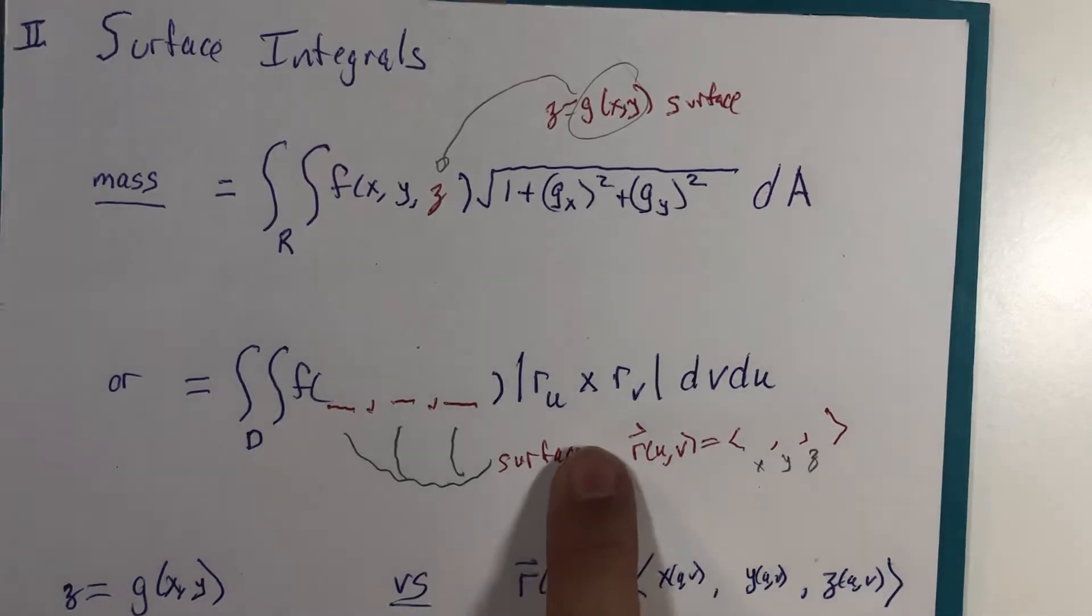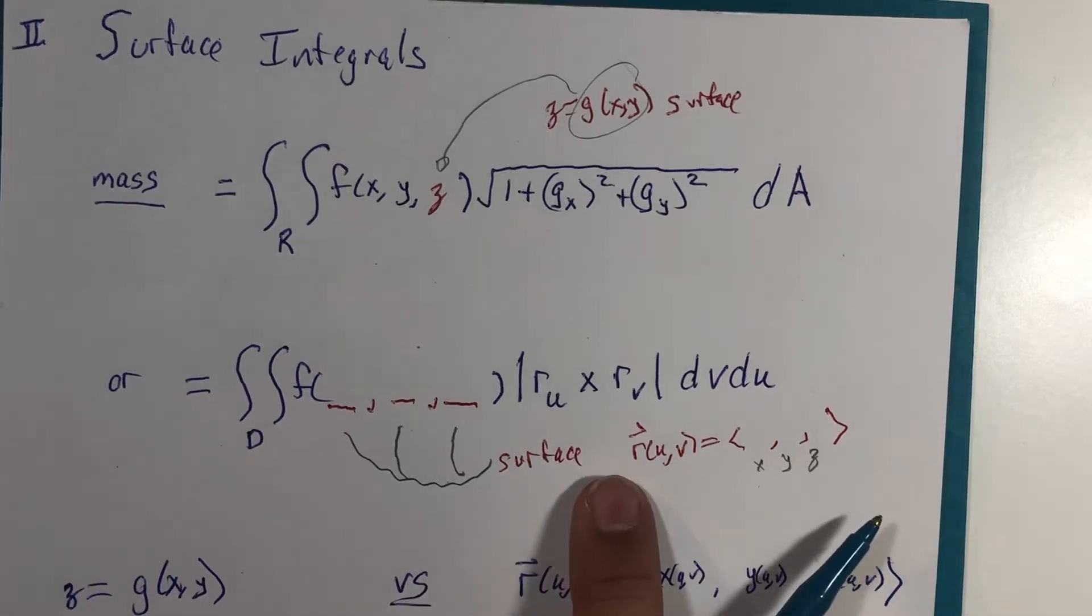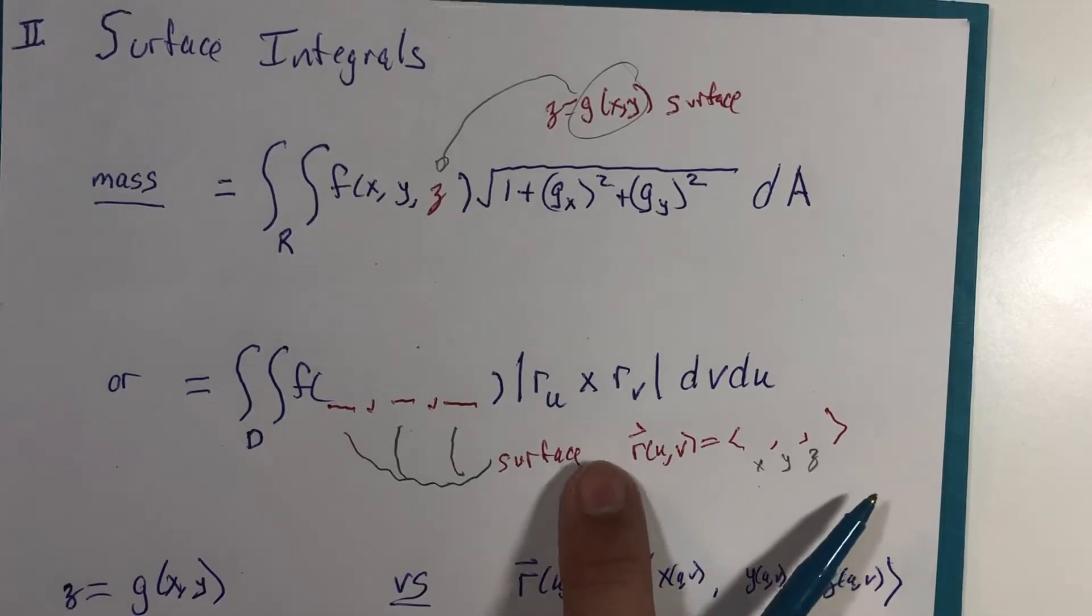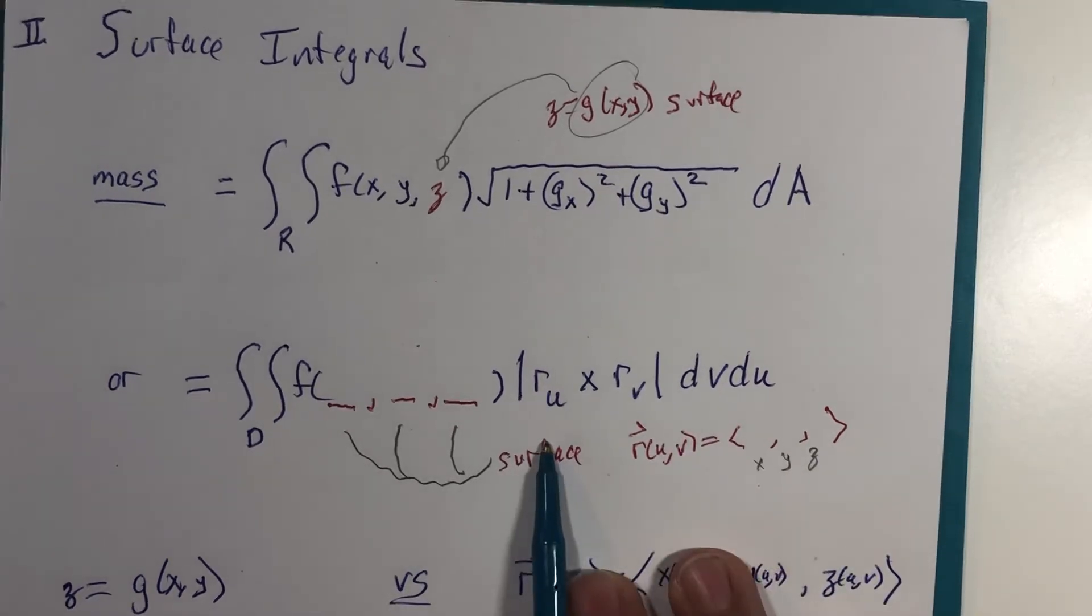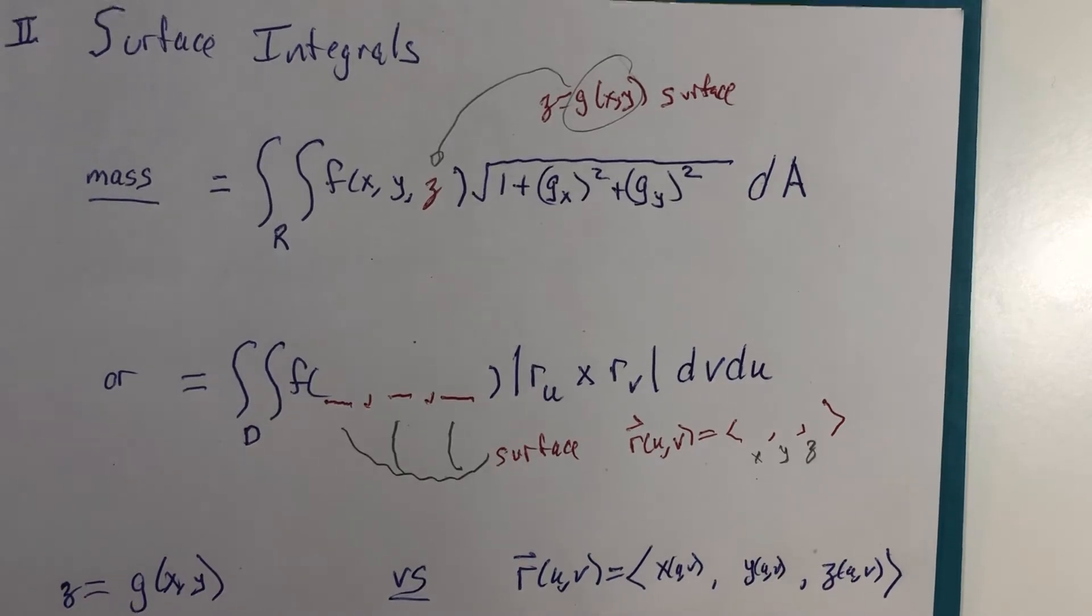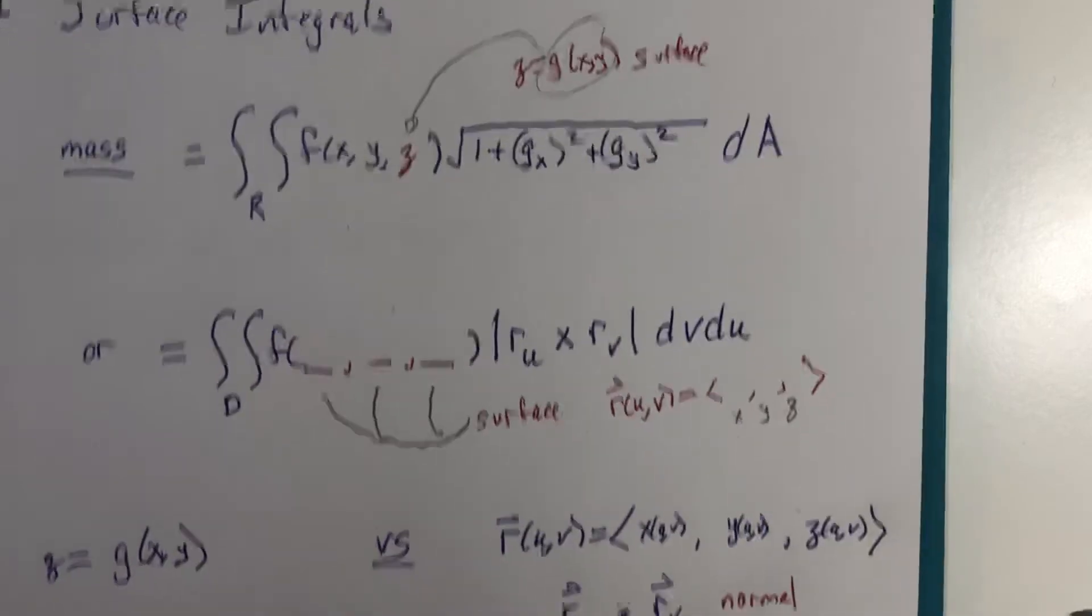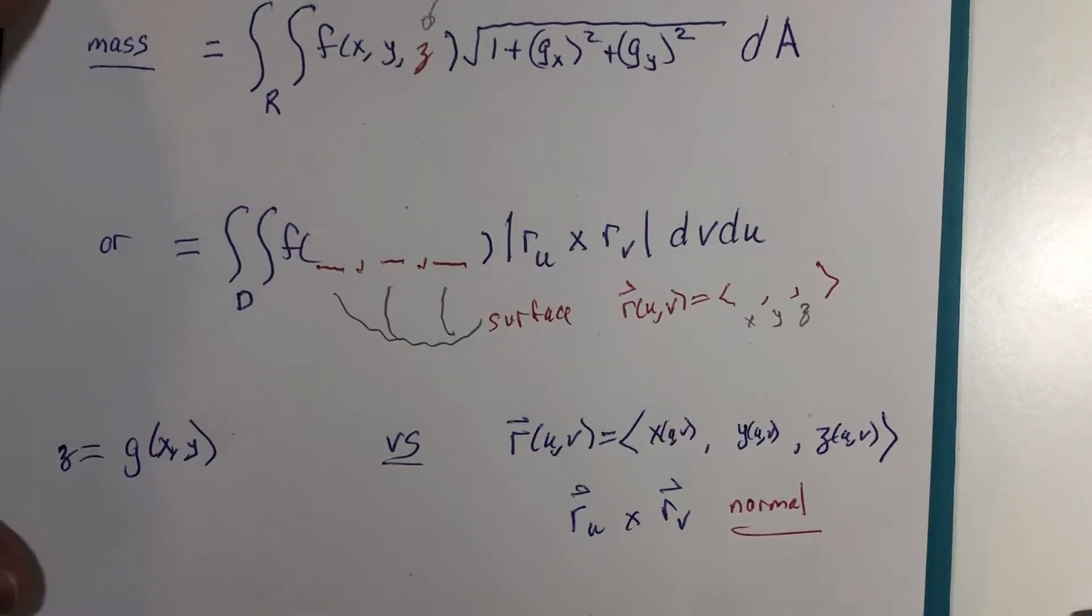In this version of the problem, what was done was to find a normal vector. We used the cross product in a previous segment. But remember, the cross product, the magnitude of the cross product, also had a different purpose. So if we have this cross product, this generated a normal vector to the surface.